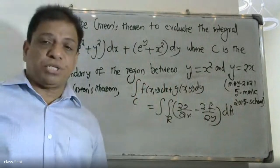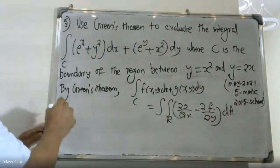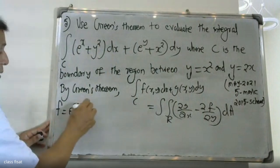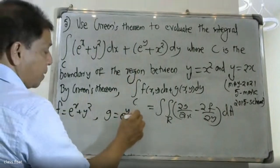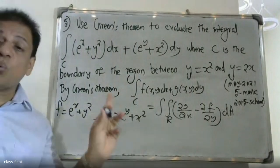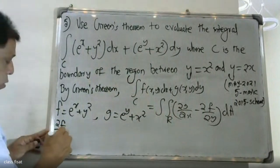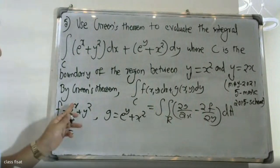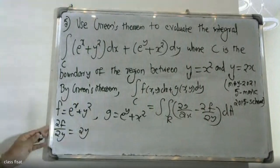We will evaluate the problem. Here f is the function from dx, which is e raised to x plus y squared, and g is the function from dy, which is e raised to y plus x squared. Partially differentiating dou f by dou y: treating x as constant, the first term e raised to x gives 0, and the other term y squared gives 2y.